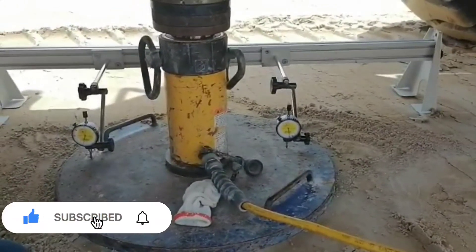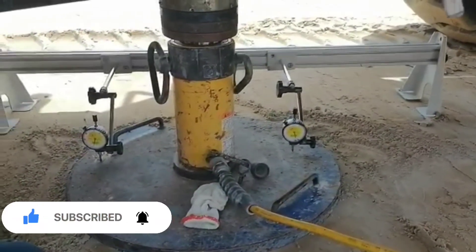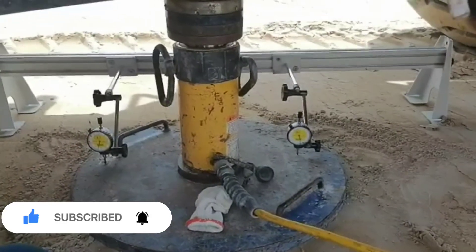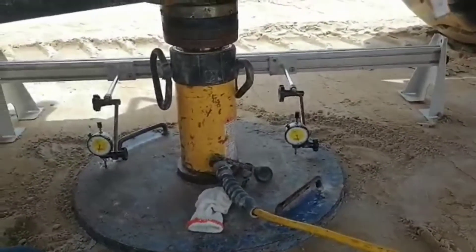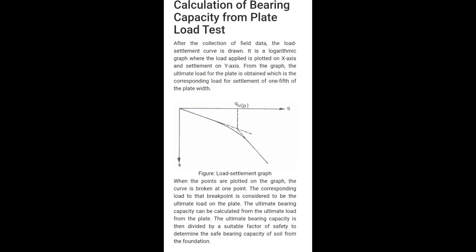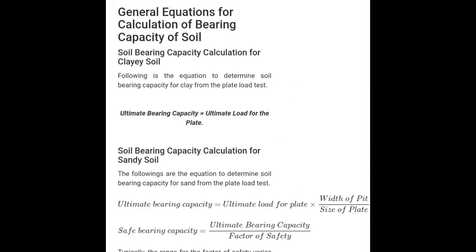We continue taking readings until the settlement of the soil becomes 0.02 mm per hour. After this, there is a final reading which we note, and then we calculate it and make a graph to find out the ultimate bearing capacity of the soil and the settlement. This data is used to design a structure.